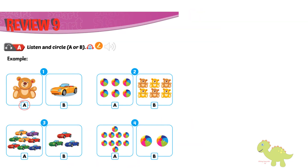Review 9. A. Listen and circle A or B. 1. I have a teddy bear. A teddy bear? Yes. 2. How many balls? 6 balls. 3. How many cars? 8 cars. Wow. 4. How many balls? 2. No. 10. 10 balls? Yes.